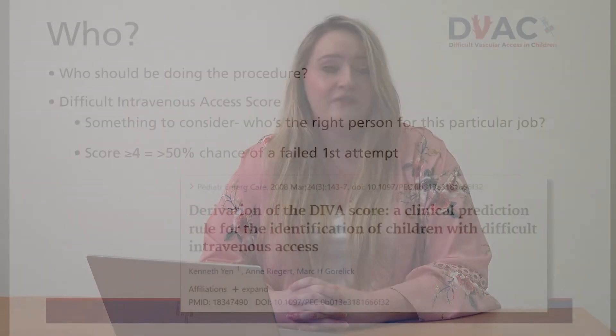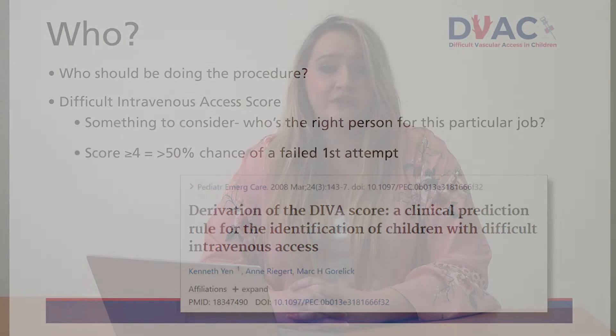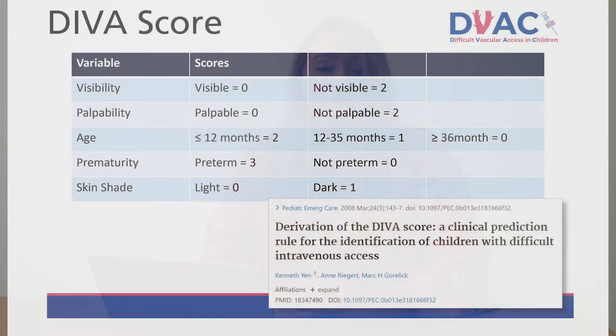So who's the best person to perform the procedure? IV access and blood sampling in paediatrics is notoriously tricky, so it's important to have strategies in place to determine the best person for the job. The DVA, or difficult intravenous access score, was developed following a study looking at children having IV access sited in the emergency department. The results generated a list of patient factors which determined the chances of a successful first IV attempt. A DVA score of four or more indicated a greater than 50% chance of a failed first attempt at siting IV access.